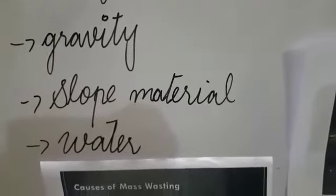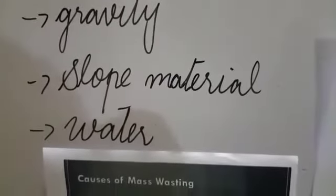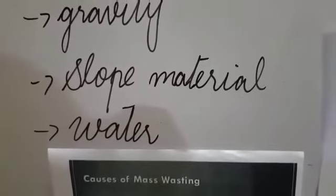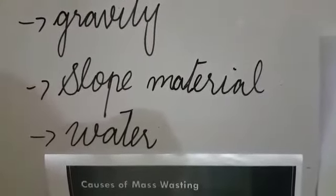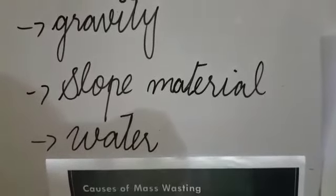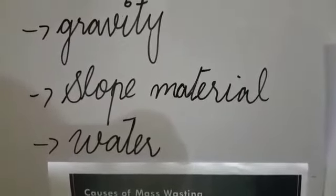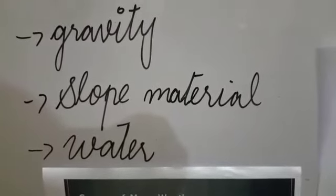Next is slope material. What is slope material? The slopes that contain layer of a soft material like clay or shale respond more to Mass Wasting than hard surface slope.